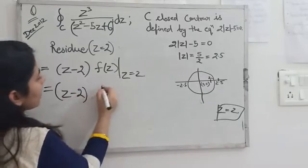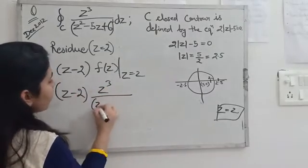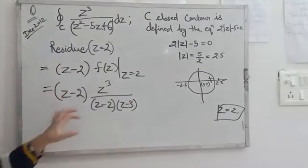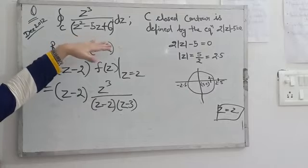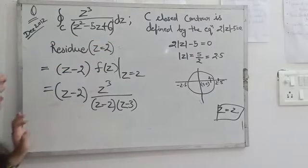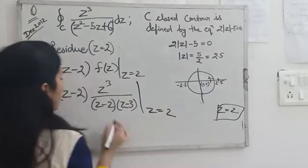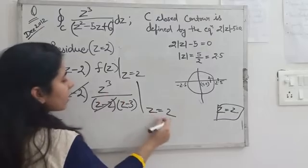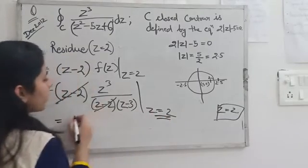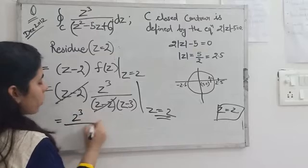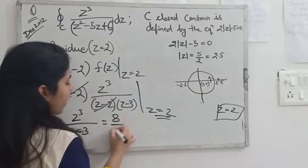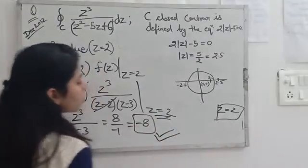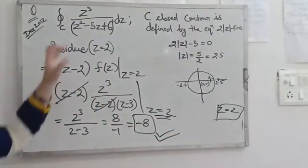Now putting the value of z, we have z³ / [(z - 2)(z - 3)]. After canceling (z - 2), we put z = 2: 2³ / (2 - 3) = 8 / (-1) = -8. So this is the value of residue at z = 2, the pole which lies inside the given region.